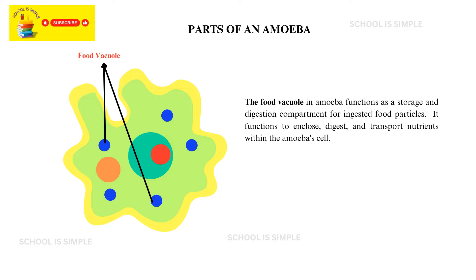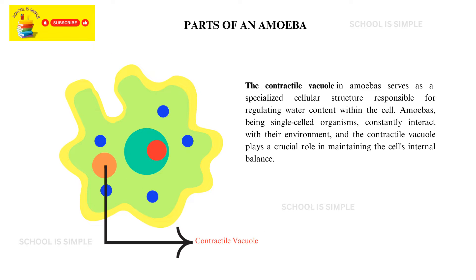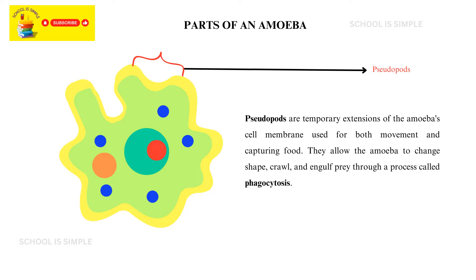The food vacuole in amoeba functions as a storage and digestion compartment for ingested food particles. It functions to enclose, digest, and transport nutrients within the amoeba's cell. The contractile vacuole in amoebas serves as a specialised cellular structure responsible for regulating water content within the cell, playing a crucial role in maintaining the cell's internal balance.